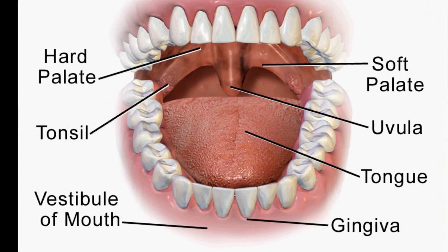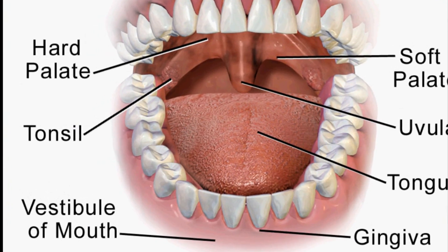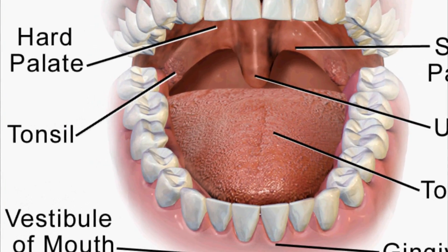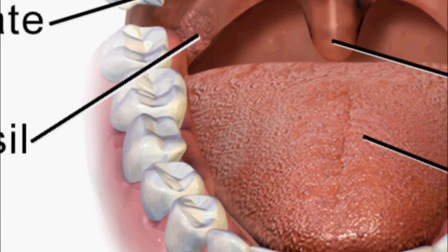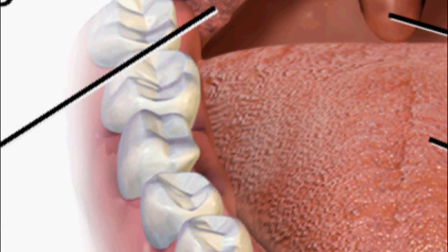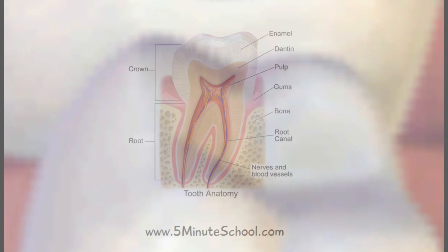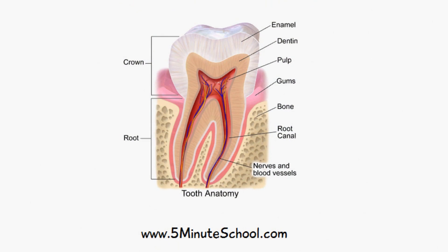In today's video we'll be talking about teeth. When you look inside the mouth, you're unable to see the entire tooth because the full tooth structure is covered by gums. Here is what the teeth look like. This picture shows you what a molar tooth looks like. Even though the shape is different from the other teeth, the internal structure is the same.